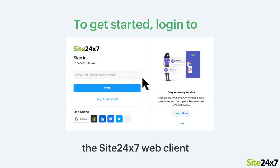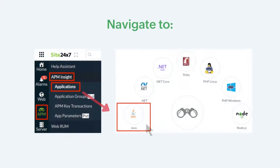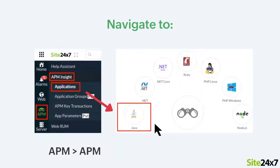To get started, login to your Site247 web client. Now navigate to APM, APMNZ applications and click the Java icon.